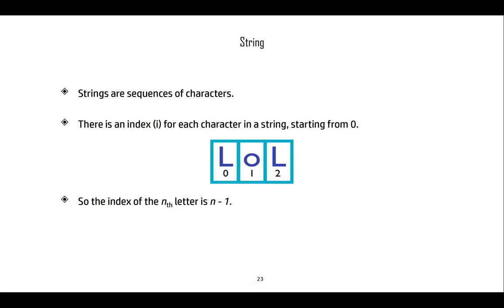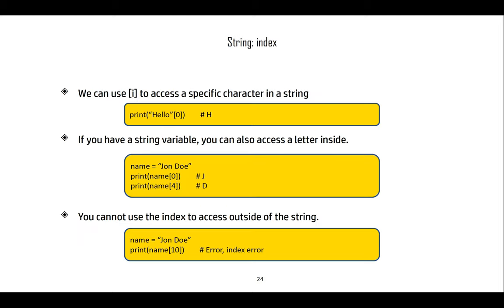Back to strings. Strings are sequences of characters, and each character has an index starting at 0. In the string 'LOL', the first L has index 0, O has index 1, and the last L has index 2. The highest index is the length minus 1. We can use index notation to access specific characters — for example, printing 'hello' at index 0 gives just 'H'.